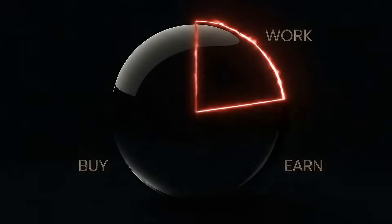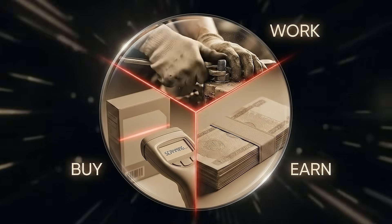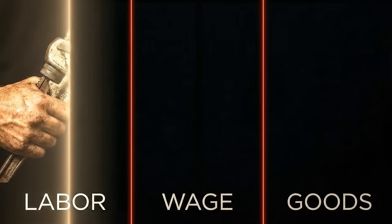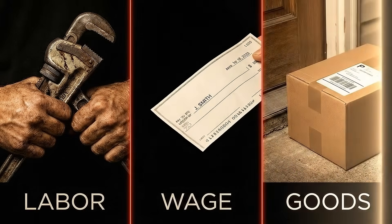For 200 years, the global economy has followed one simple, unbreakable rule. People work. People earn. People buy. It's the engine of capitalism. You trade your labor for a wage, and then you trade that wage for the stuff someone else produced.